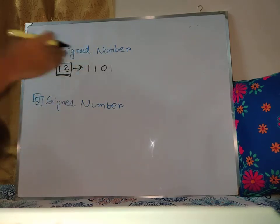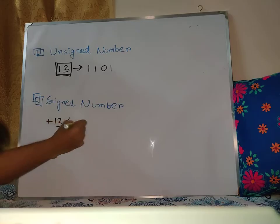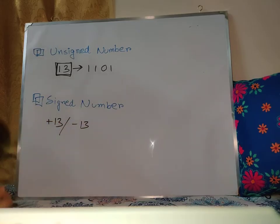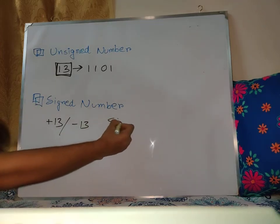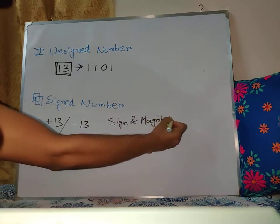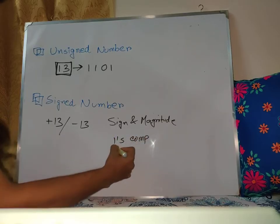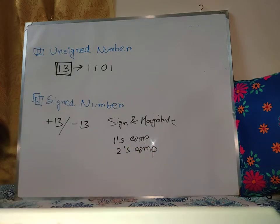But we have a signed number concept. When I call the signed number, it could be positive sign or negative sign. We will represent the signed number — for example, sign and magnitude, or 1's complement, or 2's complement.